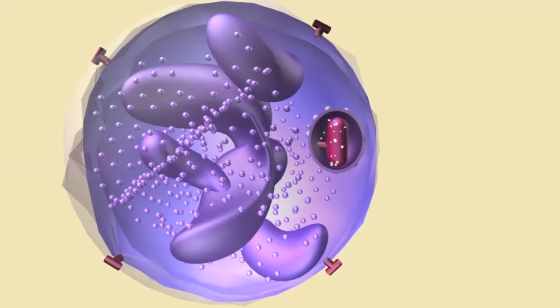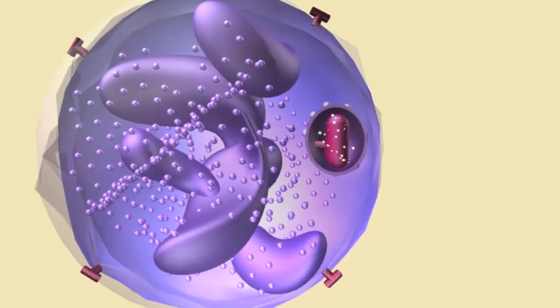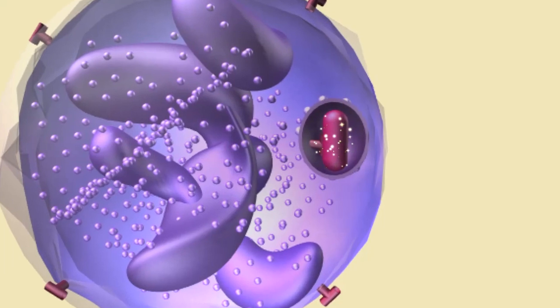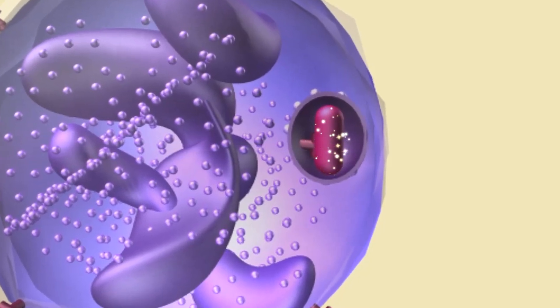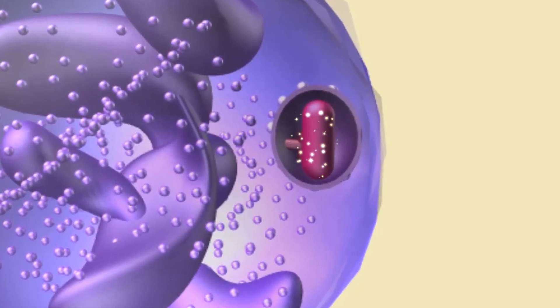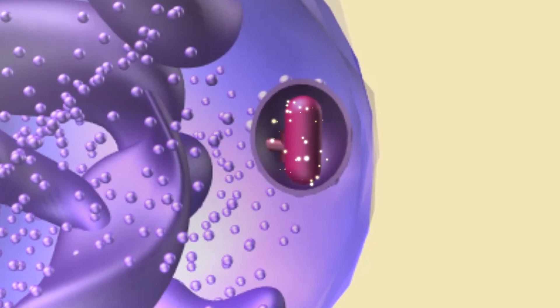The digestive enzymes from the lysosomes, after fusing with the vesicle, then begin the breakdown of the microbe. This kills it, and as it is broken down, nutrients can be absorbed into the cell.